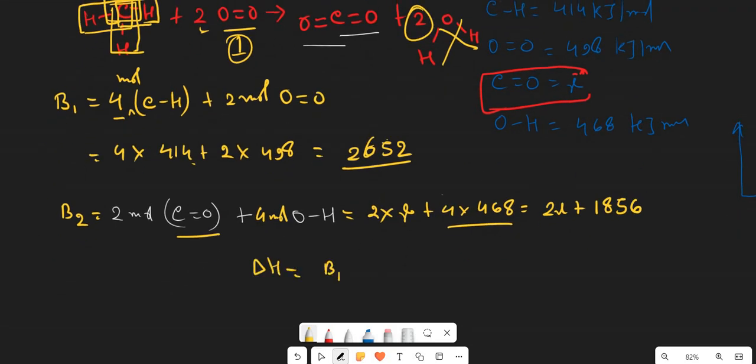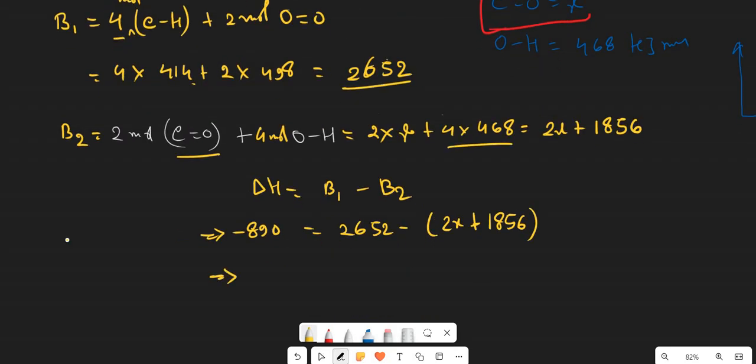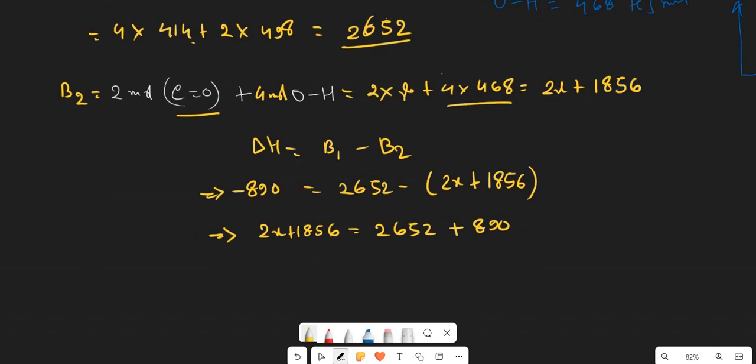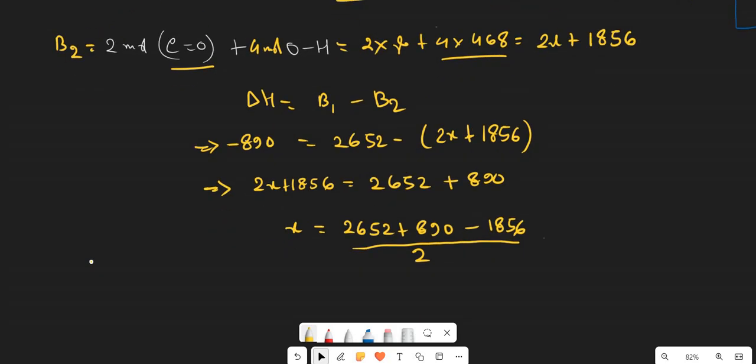Delta H should collect from the cathode equation, because E1 minus B2. E1 minus B2: 2652 minus B2, 2 times plus 1856. Delta H is minus 1. I will change the size: 1856 minus 2652, which is negative.